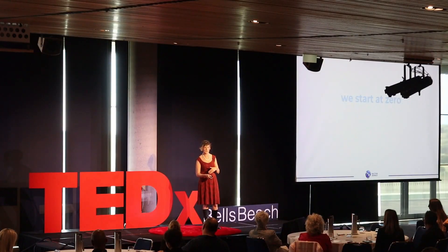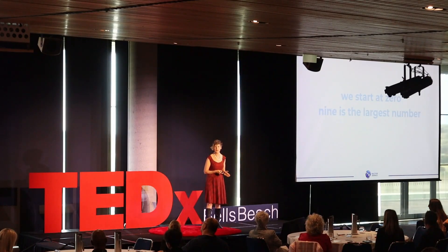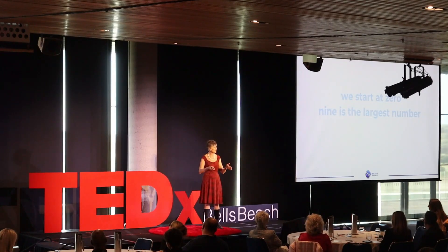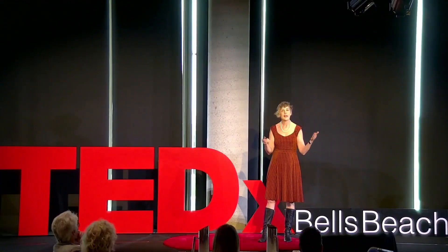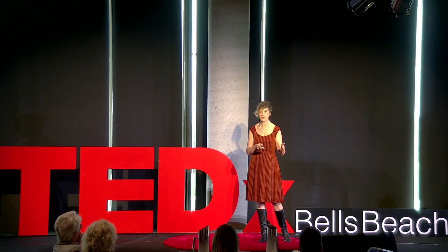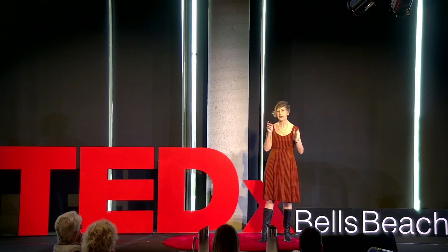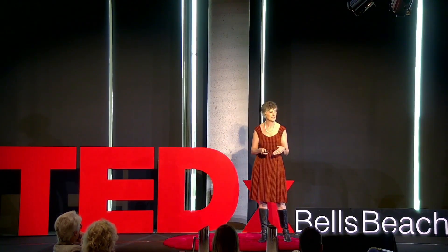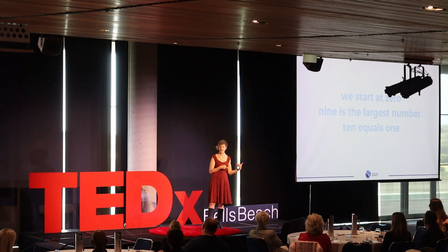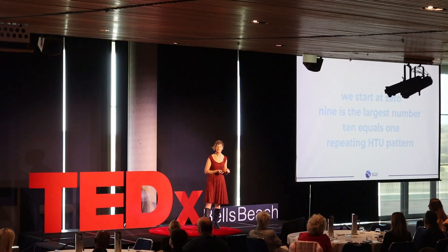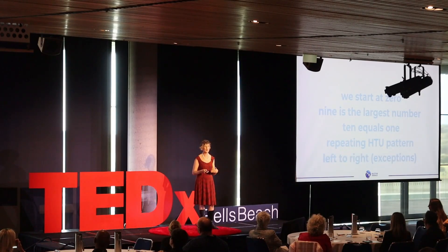So maths has its own rules as well. We start at zero when we're counting, we count to nine — nine is our largest number. If you think of units, tens and hundreds — this repeating pattern — we can only have zero through nine in the units place. Once we get to ten, we can't stay in the units place. Ten is equal to one in our base-ten system. If I have ten ones I've got one ten; ten tens I've got one hundred; ten hundreds I've got one thousand. It's just a rule within maths — this repeating hundreds, tens, units pattern — left to right with exceptions.